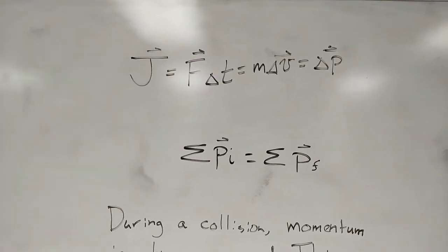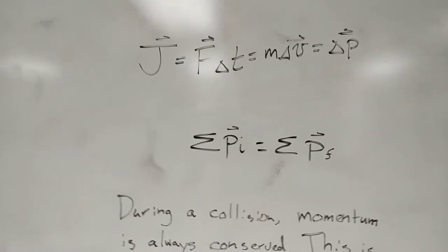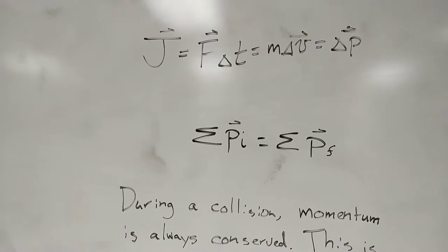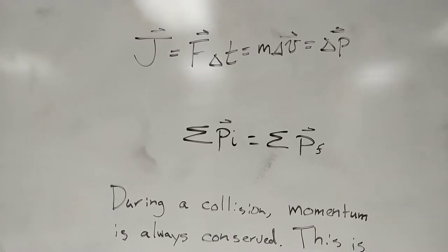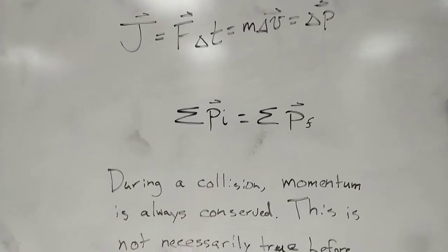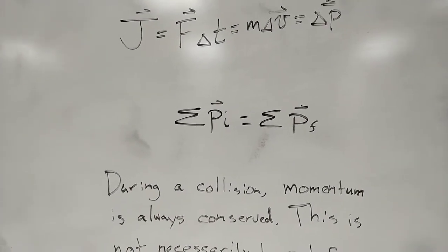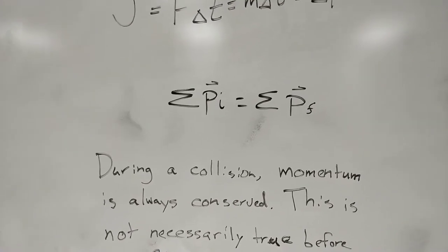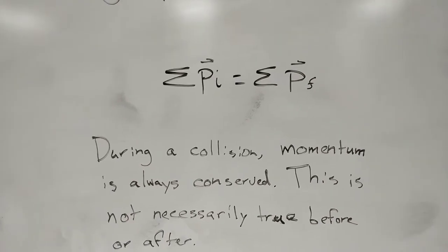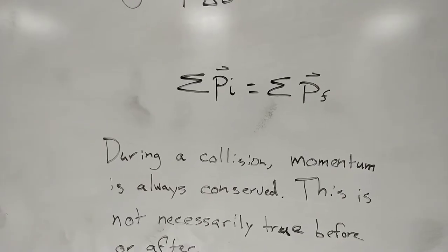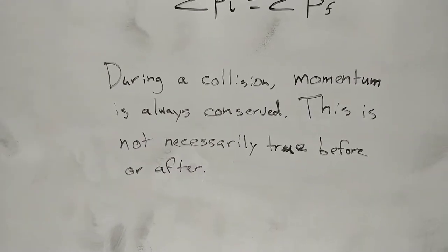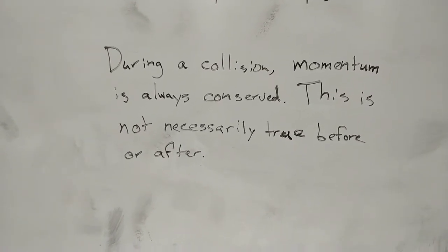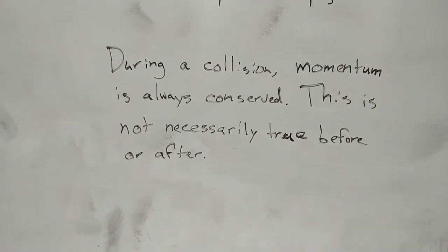We had our equations. This first one's our big equation that we're going to be using a bunch — that's J, the impulse. We know about the rest of those. But this second equation, we haven't seen that one written down like this. This is the sum of the momentums at the beginning is equal to the sum of the momentums at the end — that sounds like conservation of momentum, and I think that's what it actually is. And then the last bit says during a collision momentum is always conserved — this is not necessarily true before or after the collision though.